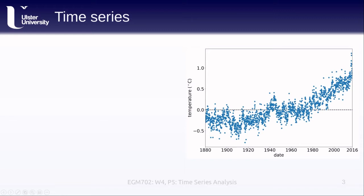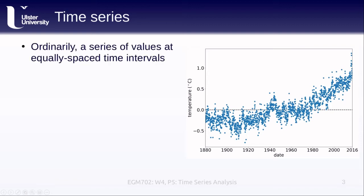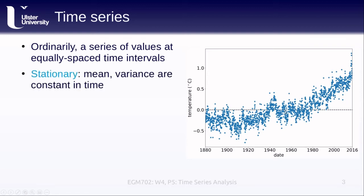All of this is to say that as we've gone on in time we have built up more and more of a time series of satellite images that we can use to do different analyses. A time series, as the name might suggest, is normally just a series of values of some variable at equally spaced time intervals. For example, here we see temperature plotted monthly between 1880 and 2016.